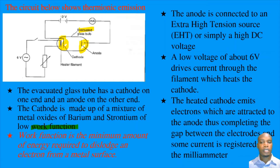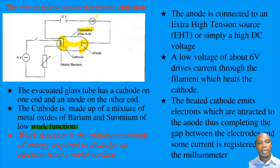The anode is connected to an extra high tension source, simply a high DC voltage. A low voltage drives current through the heater filament, which heats the cathode. Once the cathode is heated, electrons are emitted from its surface and attracted to the anode. The electrons are negatively charged while the anode is at a positive potential, so the electrons are attracted to the anode, completing the circuit. A current is registered on the millimeter since flow of current constitutes movement of electrons from cathode to anode.